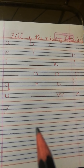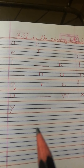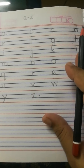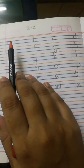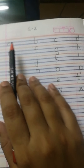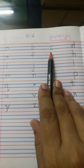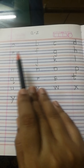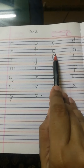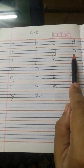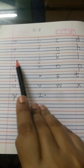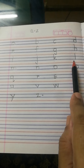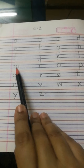Before starting or explaining, let's recap small letters A to Z. Small a, small b, small c, small d, small e, small f, small g, small h, small i, small j, small k, small l, small m.